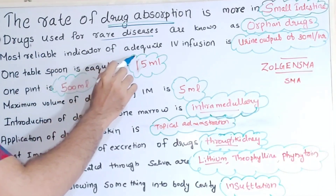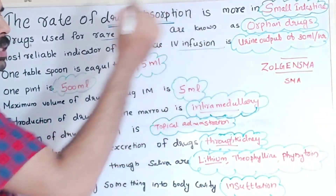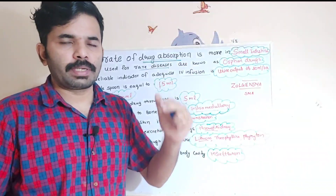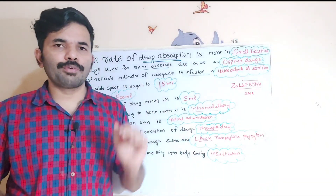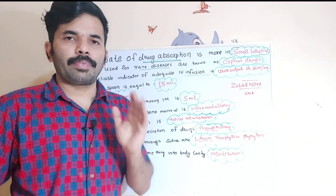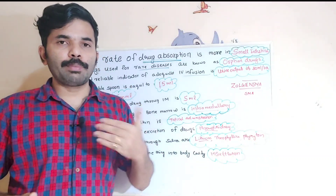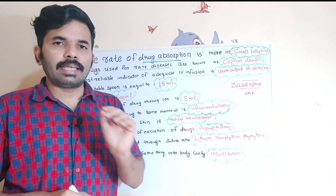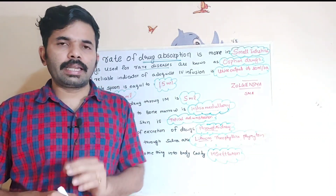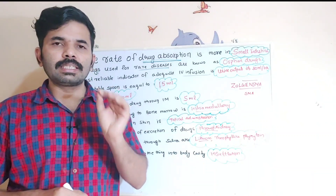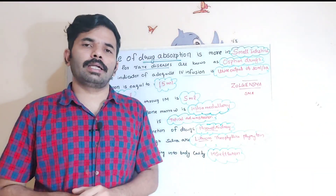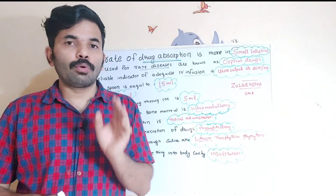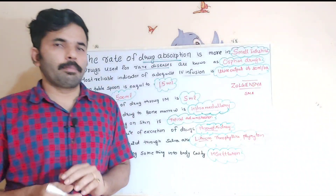The most reliable indicator of adequate IV fluid infusion is urine output of 30 ml per hour, especially in ICU. We check urine input and output to assess this.